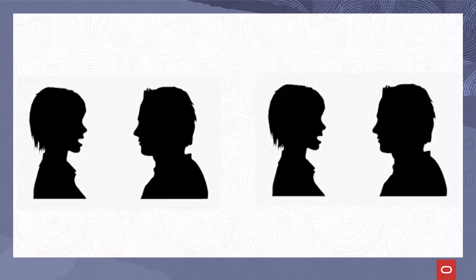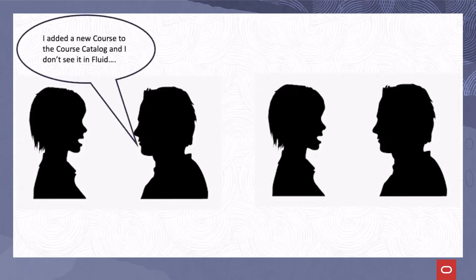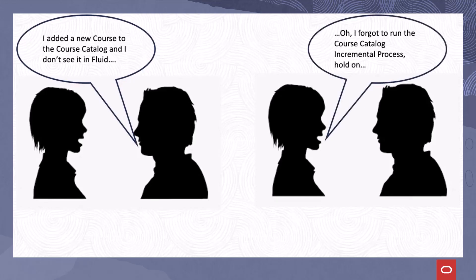Have you ever heard someone in your registrar's office or scheduling office say, I added a new course to the course catalog, but students are reporting that they don't see it in the Fluid Course Catalog search? Or, I made multiple changes to several courses and I'm not seeing those changes in the Fluid Catalog search results. Why is that? Up to now, the response you heard probably ranged from, I'm not sure why that's happening, or, I forgot to run the Course Catalog Incremental Processing Index. Hold on while I do that.